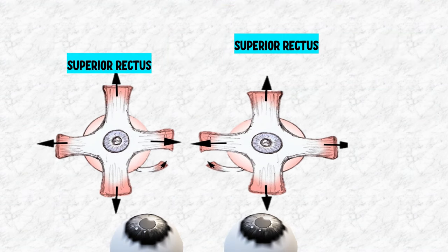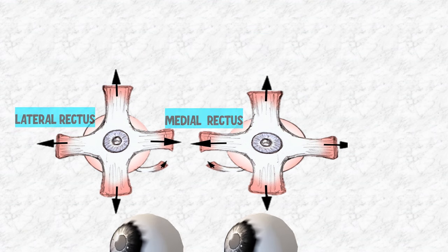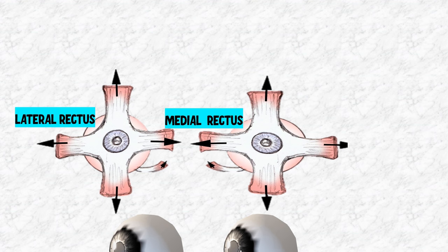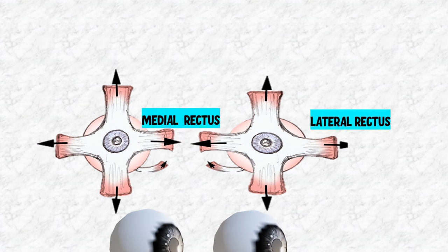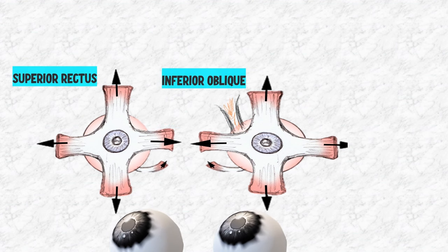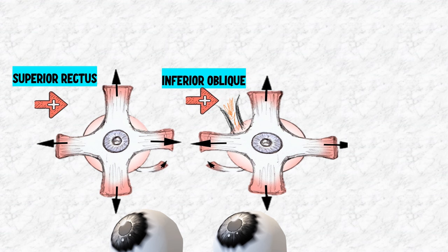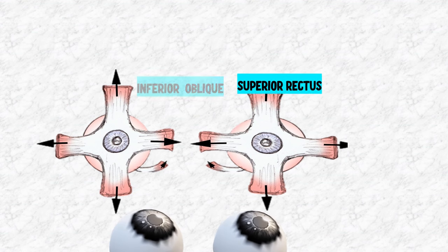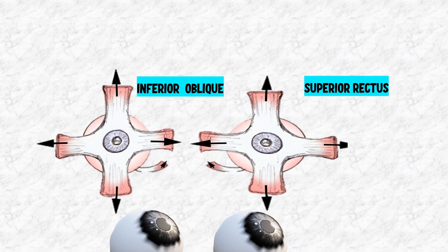For example, in direct elevation, equal innervation is needed to the superior rectus of the left eye and to the superior rectus of the right eye. In levoversion, the left eye lateral rectus and the right eye medial rectus receive equal innervation. In dextroversion, the right eye lateral rectus and the left eye medial rectus get equal innervation. In levo-elevation, the superior rectus of the left eye and the inferior oblique of the right eye receive equal innervation, and similarly in dextro-elevation, the superior rectus of the right eye and the inferior oblique of the left eye.